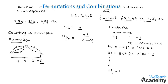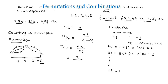Now let us learn the formula for combinations of N dissimilar things taken R at a time. We denote this by NCR, where C represents combination. The formula is NPR divided by R factorial, which becomes N factorial divided by R factorial into N minus R factorial. Make a note of these formulas as they are very important for solving examples in upcoming videos.